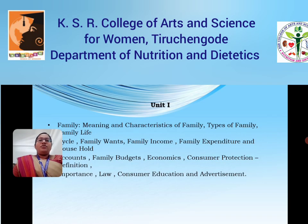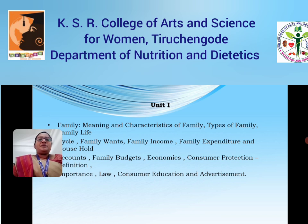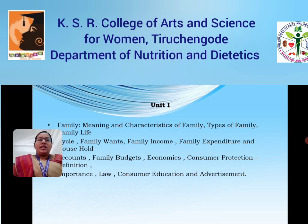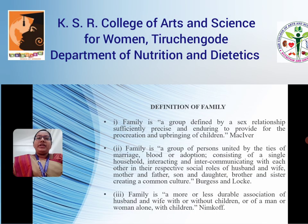Unit 1 of General Home Science comprises the meaning and characteristics of family, types of family, family cycle, expenditure and income, accounts, budgets, economics, consumer protection, definition, importance, law, consumer education and advertisement.